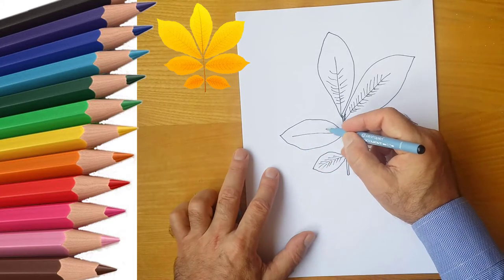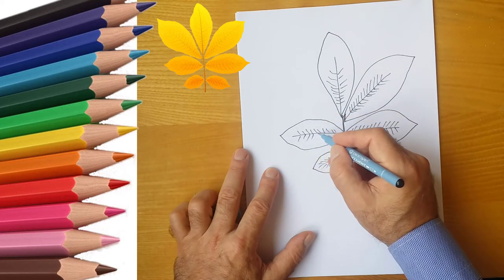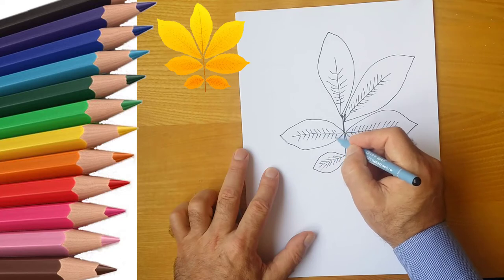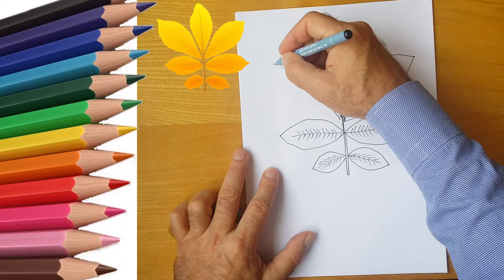We draw details on each leaf. You can collect leaves in the woods, in the park, or in the garden. Bring them home and paint.